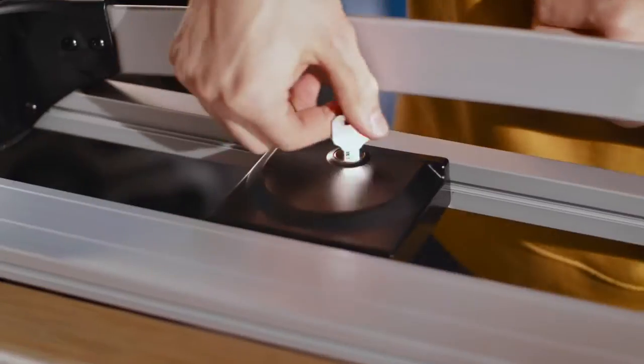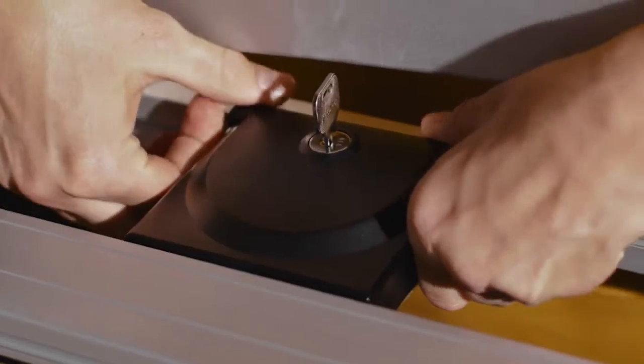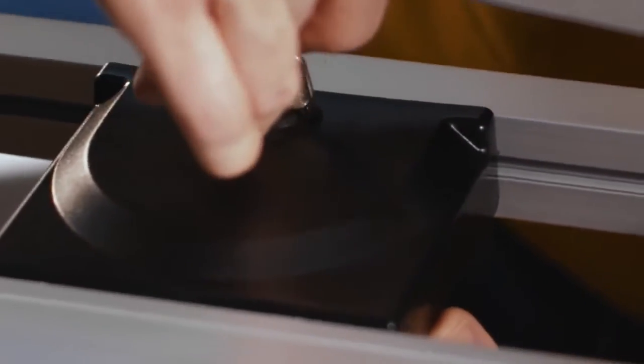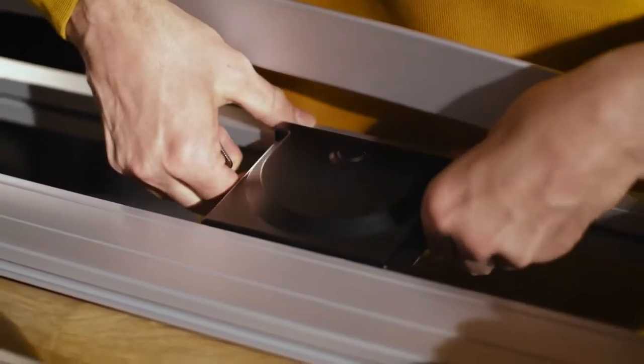First things first, unlock the cover with the key and take it out. Use the key's backside and make a quarter turn to open the other covers. Open and remove them too.